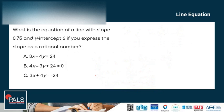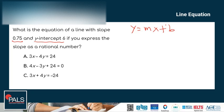Let's have another example. What is the equation of the line with slope 0.75 and y-intercept of 6? If you express the slope as a rational number — here we already have the slope and the y-intercept, so we can use the slope-intercept formula. The slope-intercept formula is y equals mx plus b, where m is the slope and b is the y-intercept.